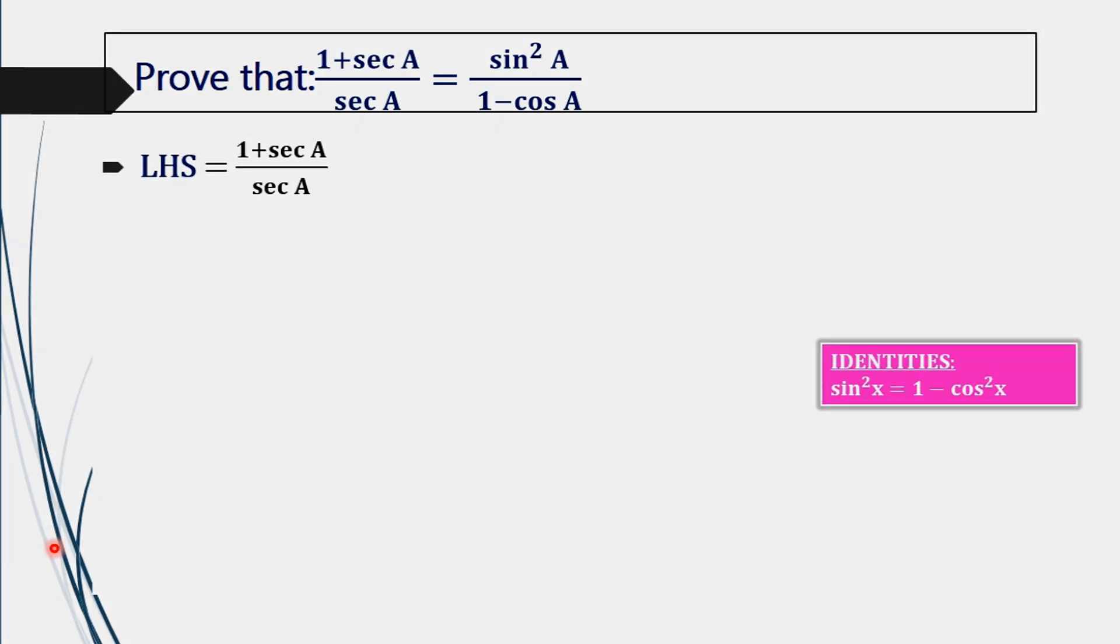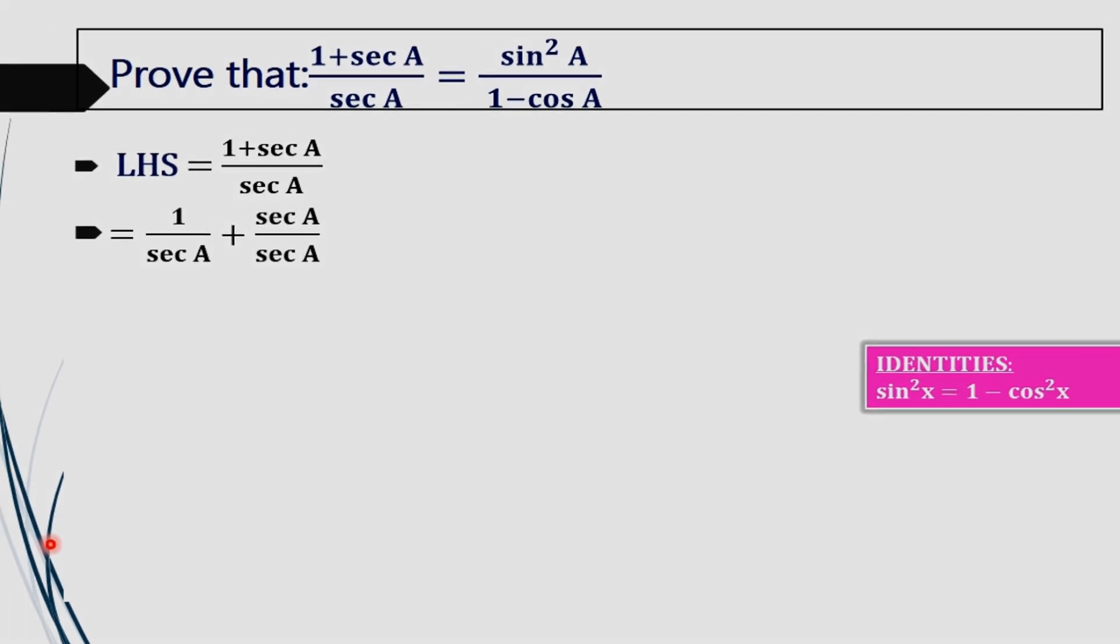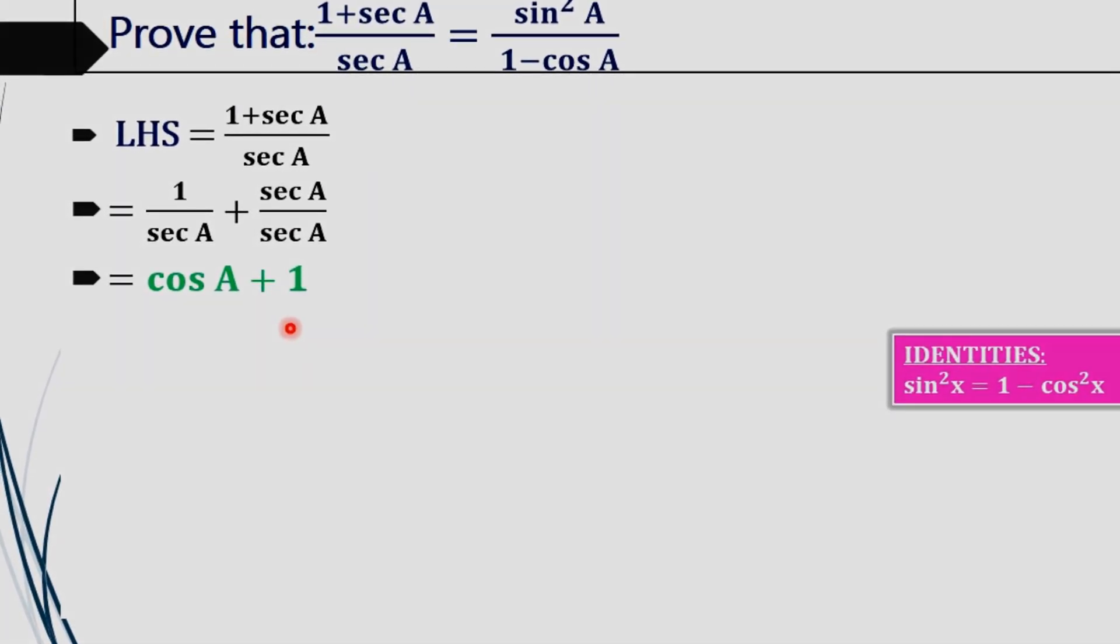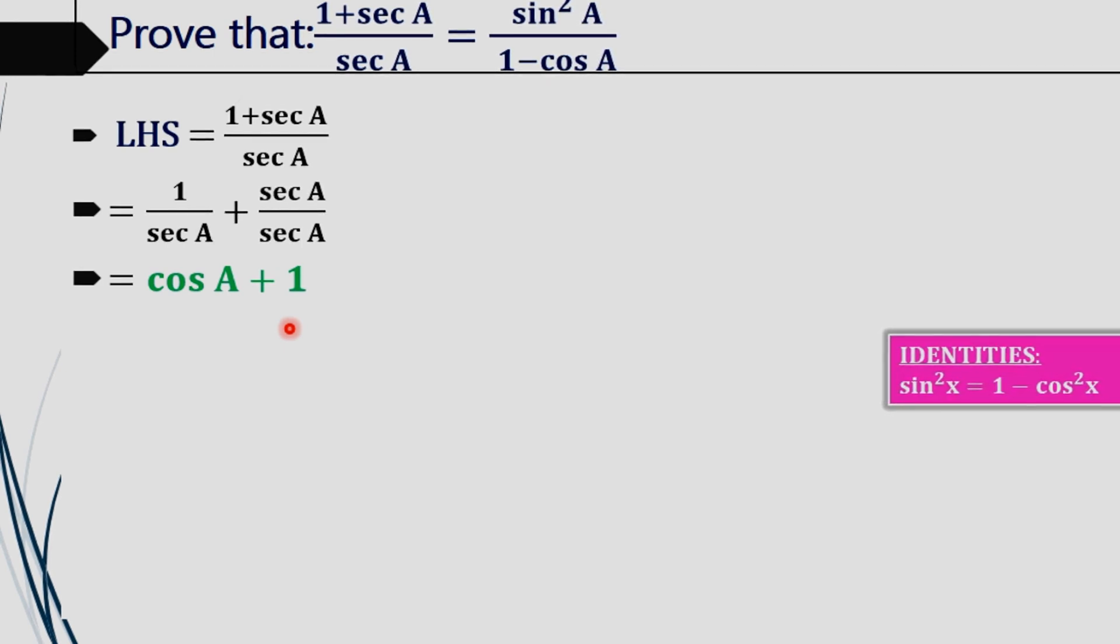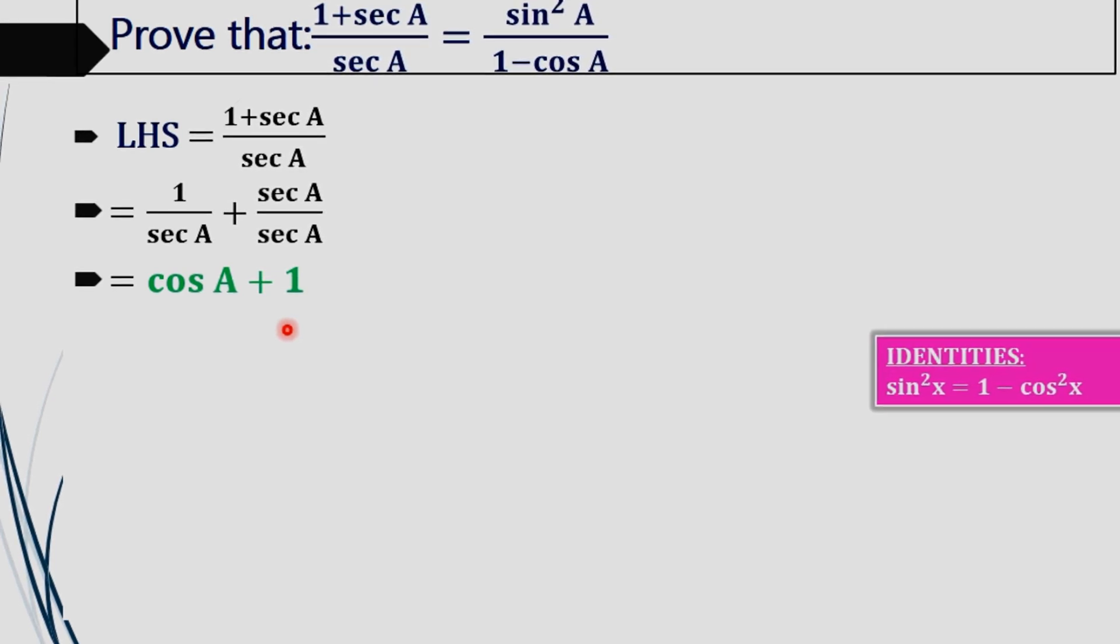Take the left hand side of the equation: (1 + sec A) / sec A. In the next step, we will divide each term of the numerator by sec A, then we will get 1/sec A + sec A/sec A. What is 1/sec A? That is cos A. sec A/sec A will give 1. So we will get our LHS as cos A + 1, which is the simplified form.